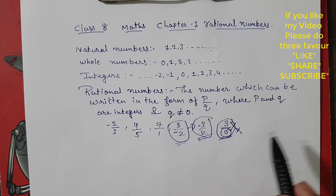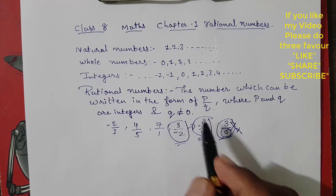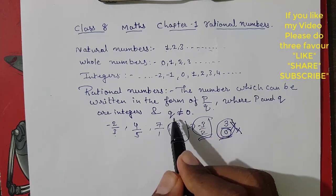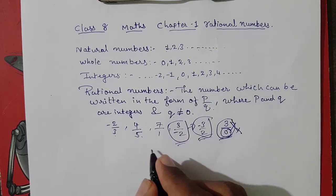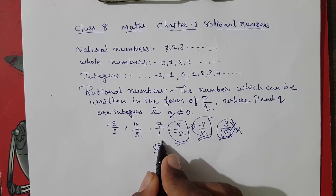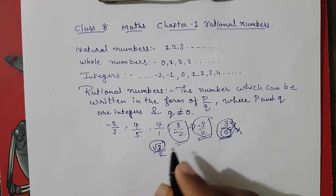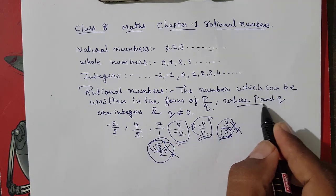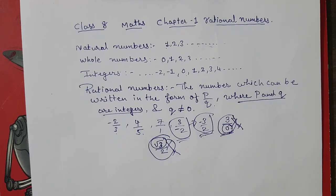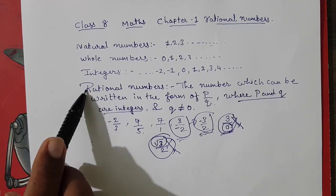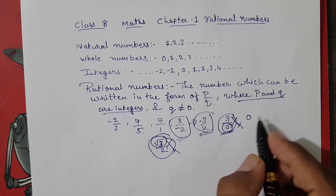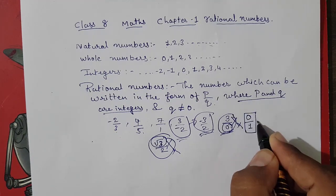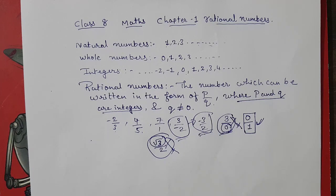Numbers that are not rational are called irrational numbers, which you will study in higher standards. Also, terms like root 3 by 2 are irrational because p and q must be integers, not surds. And remember, 0 is also a rational number — it can be written as 0 by 1. So these are the basics about rational numbers.